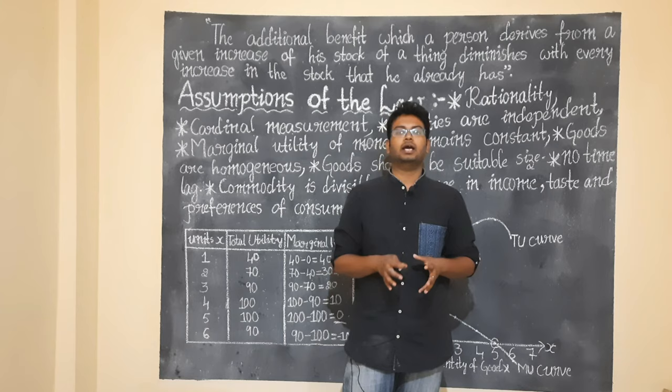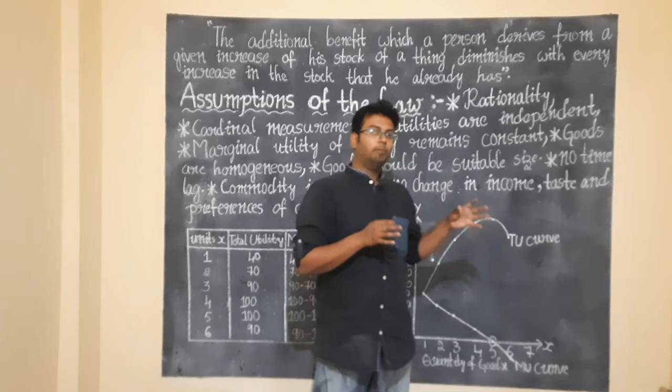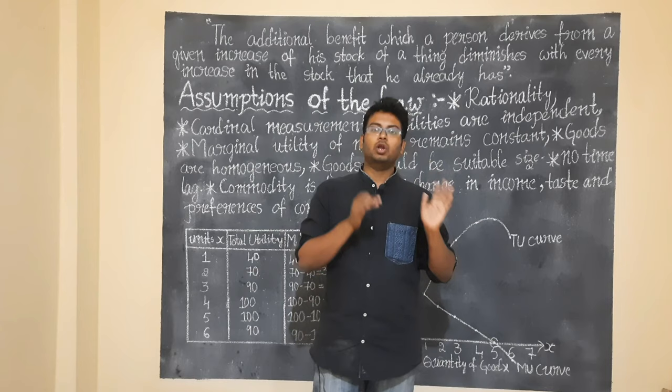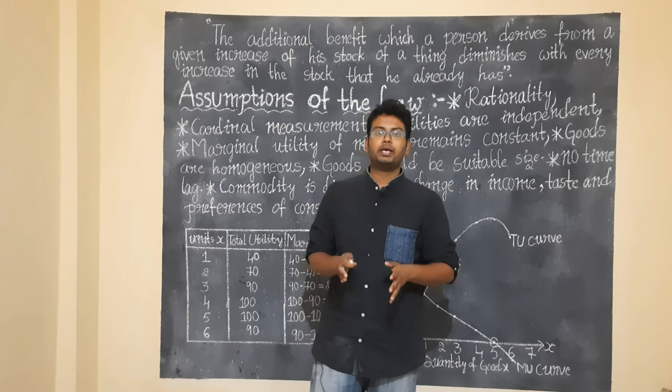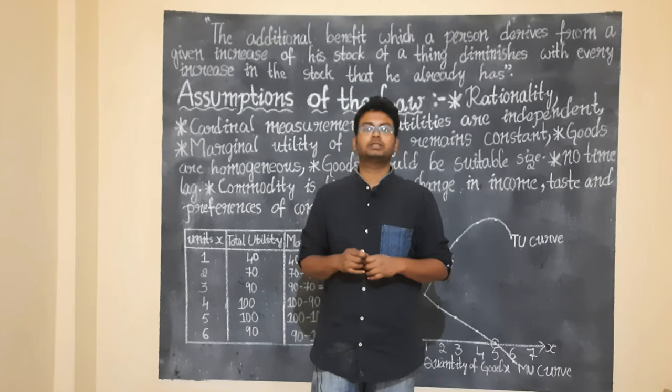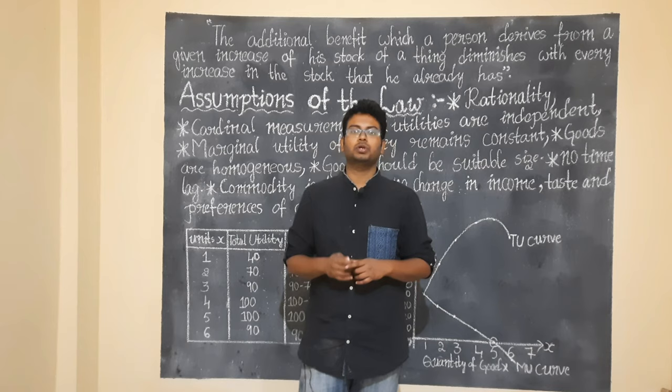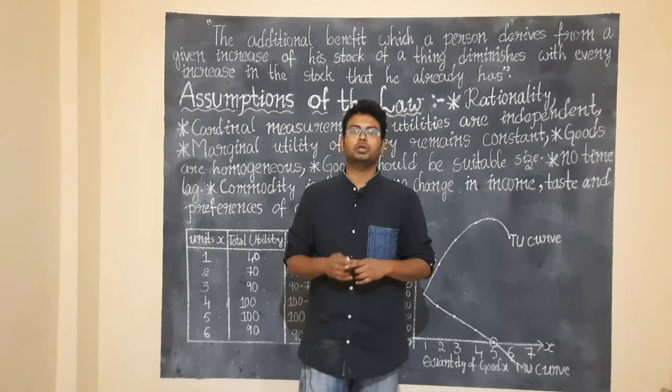Companies use this law to decide how to price and package goods. Consumer behavior follows this law — consumers always behave in line with DMU. Studying the Law of DMU is very helpful and it is the most useful and applicable law in economics — the Law of Diminishing Marginal Utility. I hope you are clear with this topic. We will continue with economics topics in the next video. Please subscribe to and share our channel. Thank you, students.